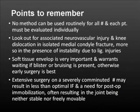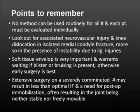In summary: no single method can be used routinely for all these fractures and each patient must be evaluated individually. Look out for associated neurovascular injury and knee dislocation, especially when the fracture line extends laterally or there is instability due to ligament injuries. The soft tissue envelope is very important — wait if blisters or bruising are present; otherwise early surgery is the best option. A ring fixator can be planned if there is soft tissue compromise. Extensive surgery on a severely comminuted fracture may result in suboptimal internal fixation, leaving the joint neither stable nor freely movable, so fixation must be planned carefully before opting for open reduction and internal fixation.